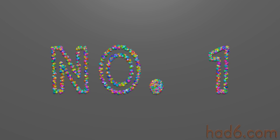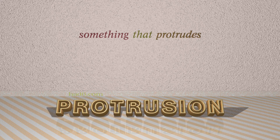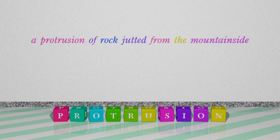Number 1: Protrusion — which means something that protrudes. For example: A protrusion of rock jutted from the mountainside.